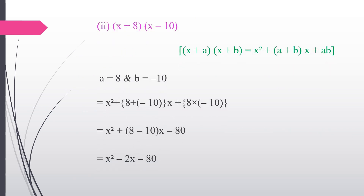Second subdivision: (x + 8)(x − 10). We apply the same identity (x + a)(x + b) = x² + (a + b)x + ab, where a = 8 and b = −10. Applying the identity: x² + (8 + (−10))x + (8 × −10) = x² + (8 − 10)x − 80. The answer is x² − 2x − 80.